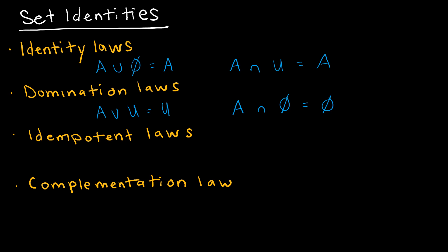The idempotent laws: A union A would just be A — I'm taking the same set combined with itself, so what's in either set is still just A. Likewise, A intersect A would still be A, so it's the same idea.